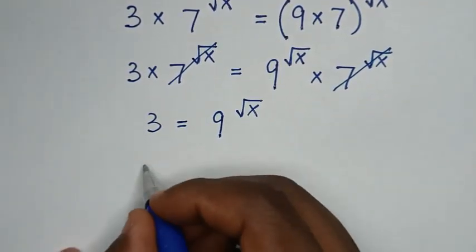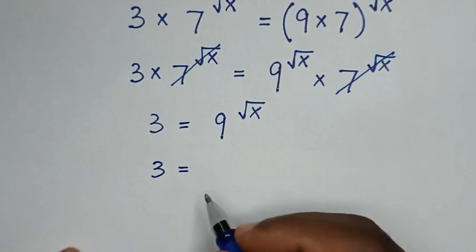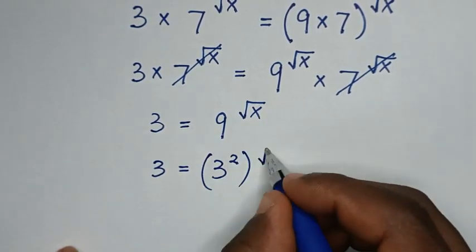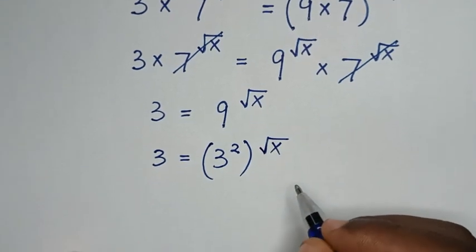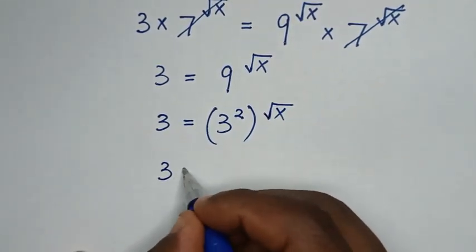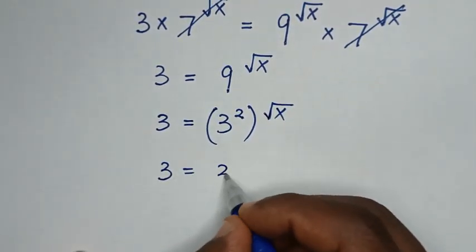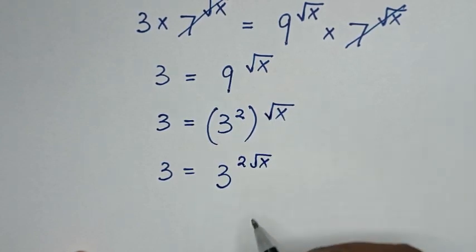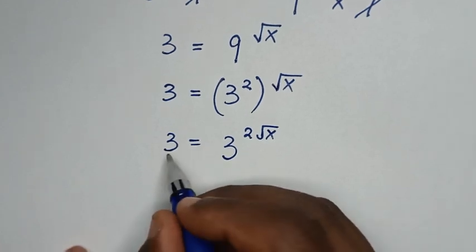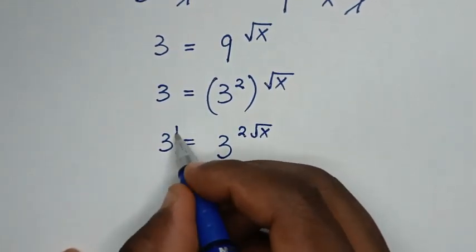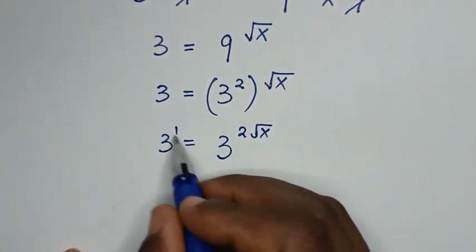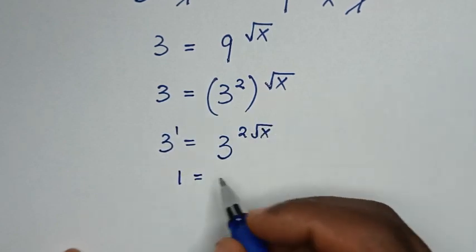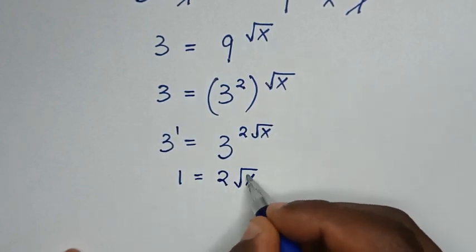In the next step, 3 is equal to 9 power square root of x. Now, 9 is the same as 3 squared. So it becomes 3 is equal to 3 power of 2 times square root of x. Since 3 is the same as 3 power of 1, we have the same base on both sides, so we compare the exponents.